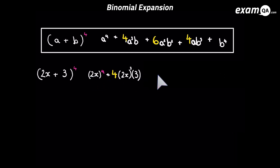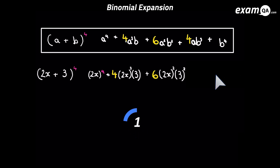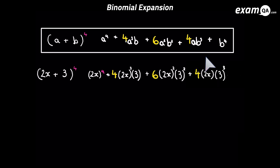In the next term, 2x's power goes further down by 1, and 3's power has gone up. The coefficient 6 came from Pascal's triangle. Then 2x's power goes down again — now simply to the power of 1 — and 3's power, which is b, has gone up to the power of 3. We need the coefficient 4 there, which again comes from Pascal's triangle.